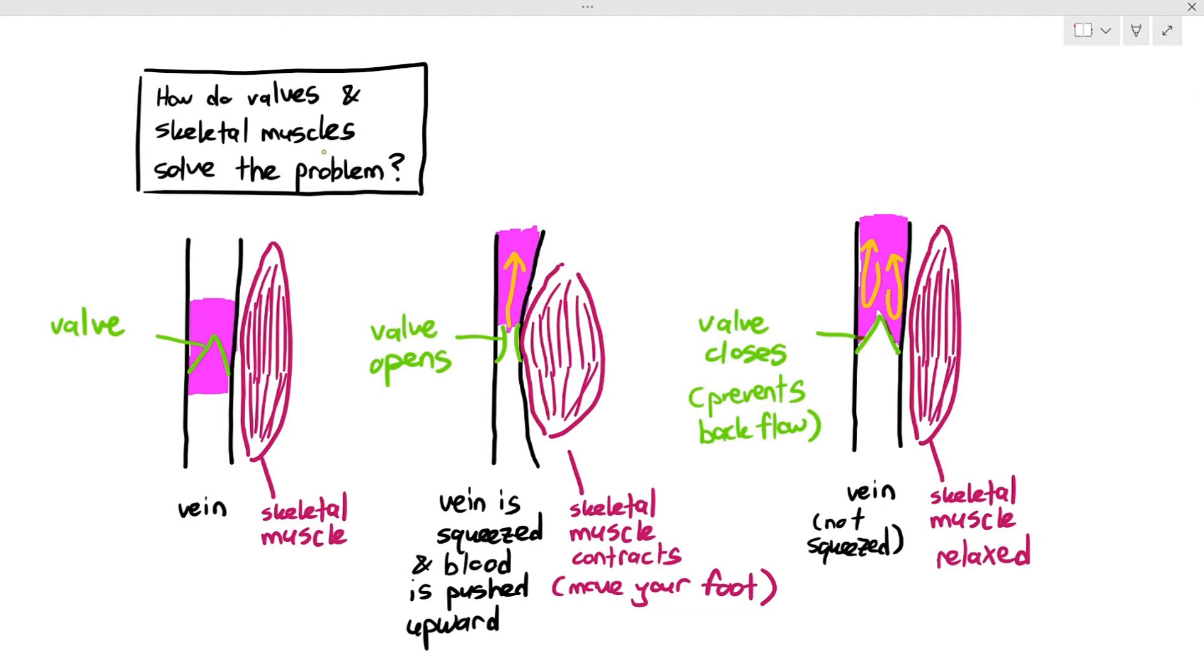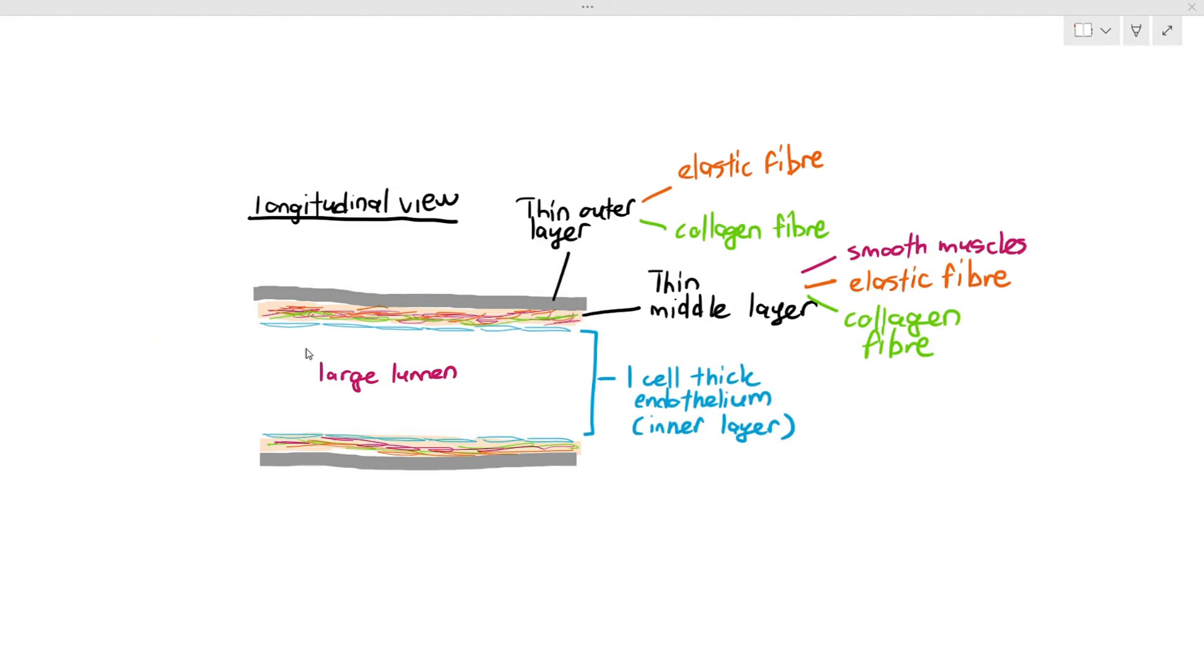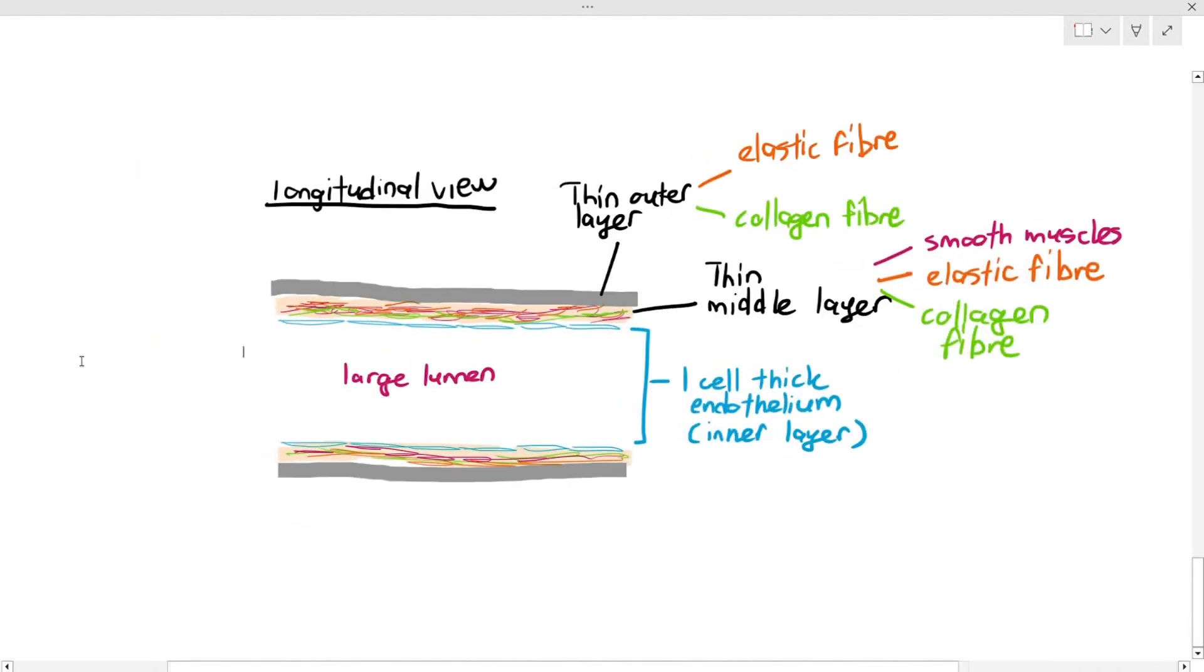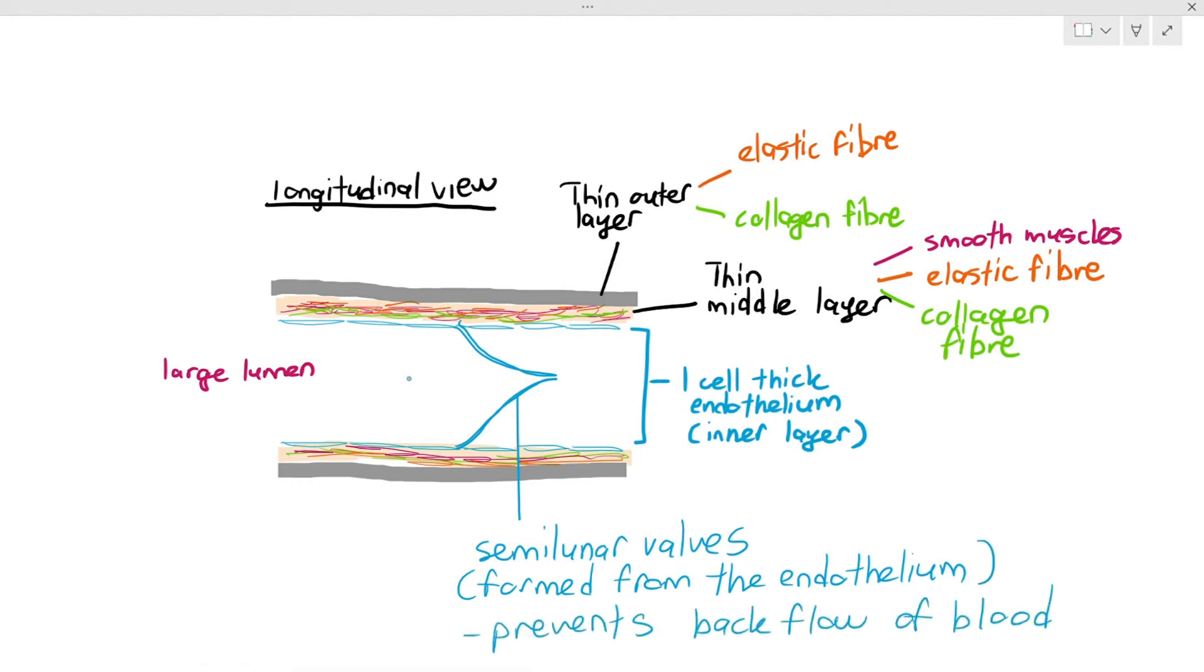That is how it's able to solve the problem of the low blood pressure within the veins. In the longitudinal view, as a reminder, it has the thin layer and outer layer, but I'm also adding in its large lumen. I'm also adding in the semilunar valves. The semilunar valves are formed from the endothelium, and the function of the semilunar valves in the vein is to prevent the backflow of blood.